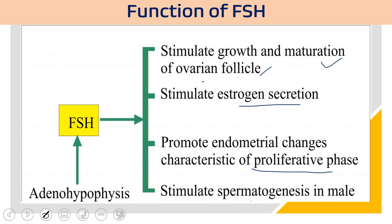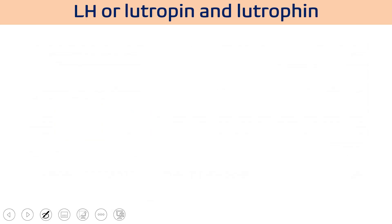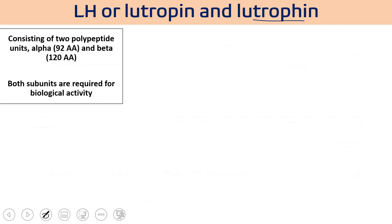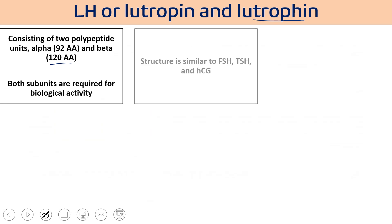Luteinizing hormone (LH), also called lutropin, also consists of two polypeptide chains. The alpha chain is the same as FSH; the beta chain here has 120 amino acids compared to 111 in FSH. Both subunits are required for their activity.